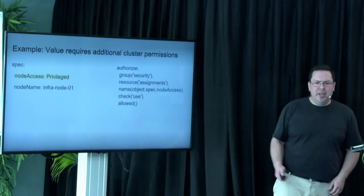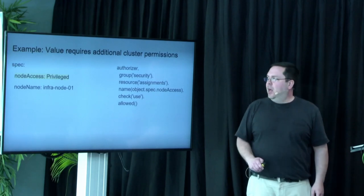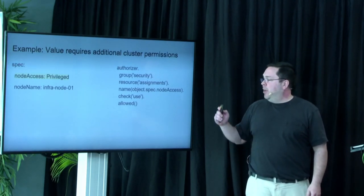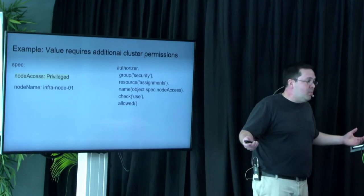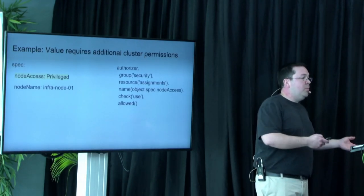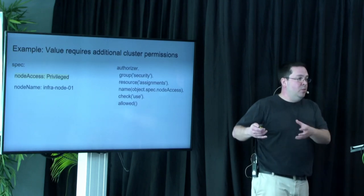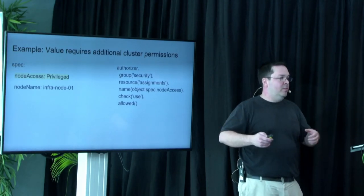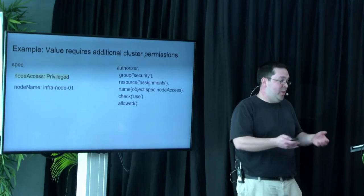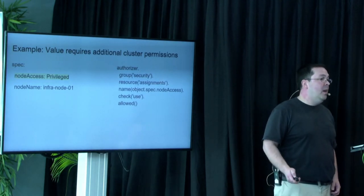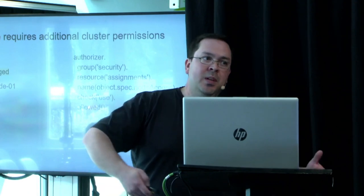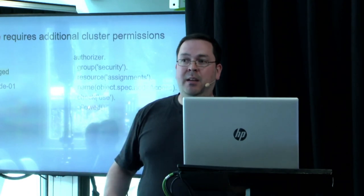The final one that I think is going to be really useful for people is to have an authorization check. So I want to create something that's privileged, and the only people who are allowed to do that are people who have the use verb on the security assignment resource with a particular name that matches the node. You can now have RBAC rules to create your own custom secondary authZ.